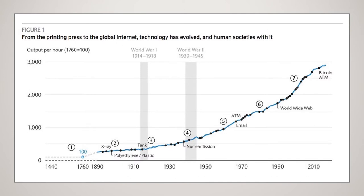This graph shows some of that. It starts with something as simple as X-rays, inventing plastic, and moves on to more crude inventions like the tank and nuclear fission used during the world wars — a time of necessity. Then things like the ATM and email were invented, and the internet came out in 1990. All of these are growing at a much faster rate — not a straight-line progression. By 2010 we would have been just under 2,000 output per hour, but we're already over 3,000 currently.